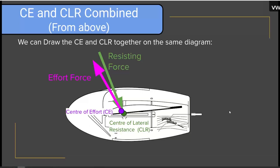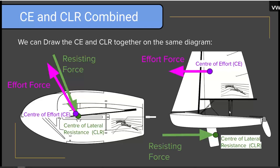What's really interesting is when we start adding the effort force and the resisting force together on the same diagram. Here we have a diagram of the boat from above, showing the effort force pointing forwards and to leeward, and the resisting force pointing backwards and to windward. The sails are trying to drive the boat forward and sideways, while the resisting force pushes back sideways to keep the boat going in a straight line. It also adds a bit of drag pulling backwards, but the effort force overcomes that so you move forward overall.